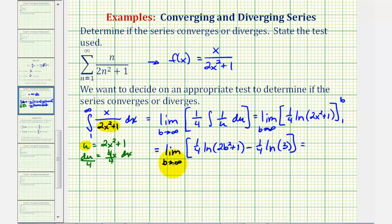We'll notice as b approaches infinity, one-fourth natural log two b squared plus one is approaching infinity, and therefore, this limit is approaching positive infinity, which does not exist, and therefore, this integral is divergent, and therefore, the given series is also divergent.